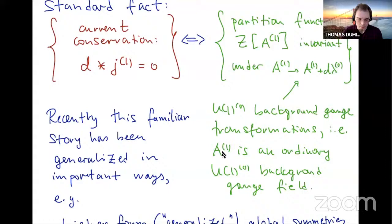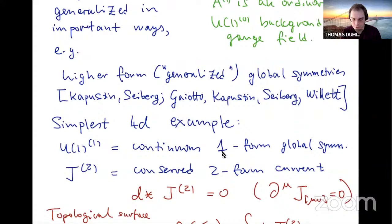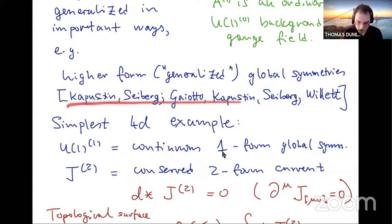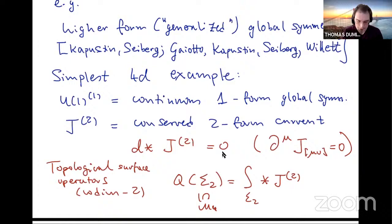The reason I'm starting with this very basic reminder is because this is the language that has been used to recently generalize this familiar story in a variety of important ways. Perhaps the most well-known generalization is from ordinary or zero-form symmetries to higher-form symmetries, initially called generalized global symmetries, but now we have further generalizations yet, introduced and clarified by various groups of authors.